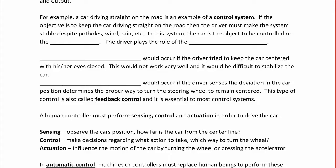For example, a car driving straight on the road is an example of a control system. If the object is to keep the car driving straight on the road, then the driver must make the system stable despite potholes, wind, rain, etc. In this system, the car is the object to be controlled, or the plant, and the driver plays the role of the controller.